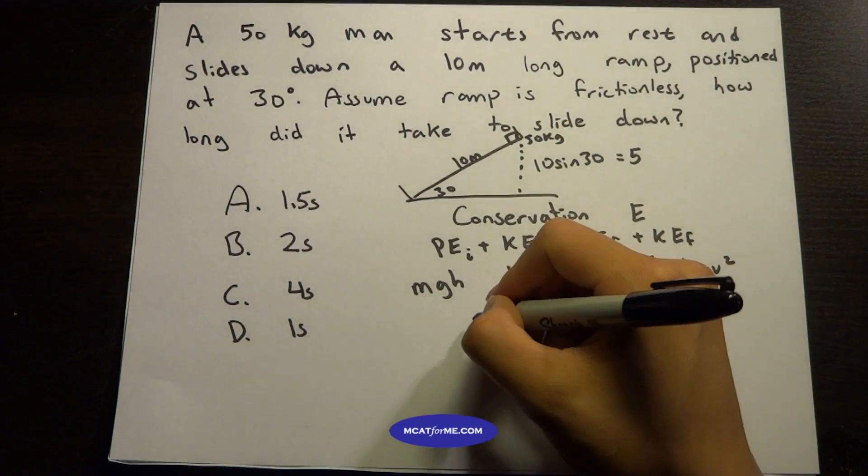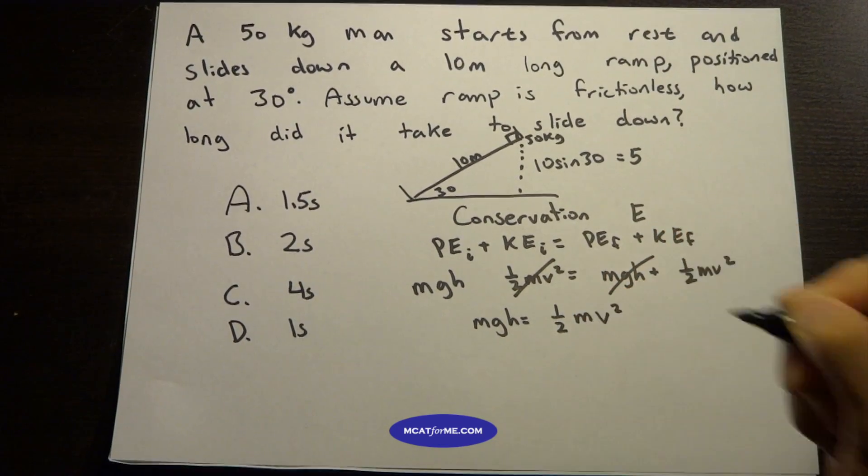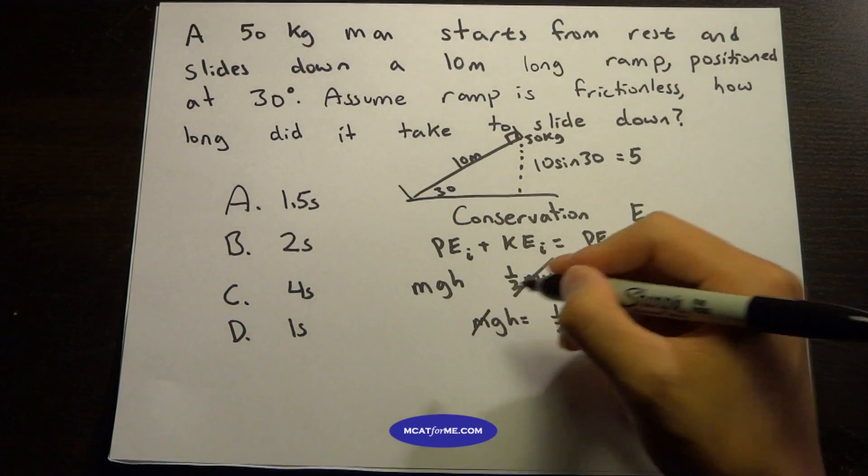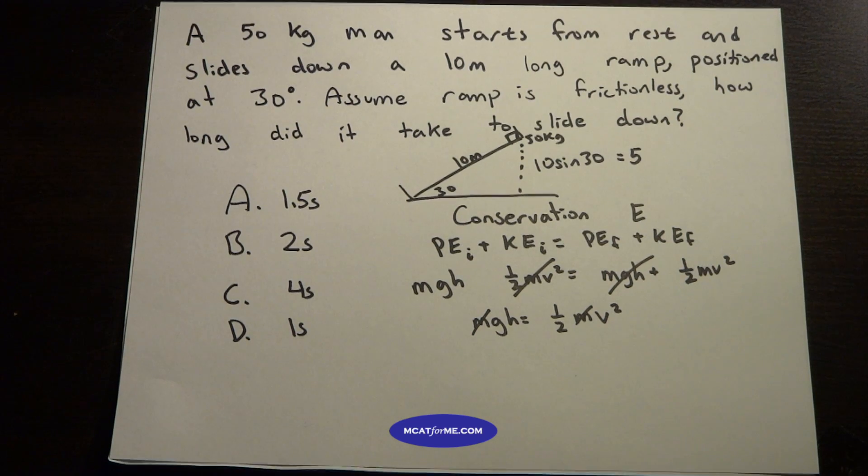So we know that all that matters is mgh equals one-half mv squared. We can see right off the bat that the m's never matter. That's the case for all these potential energy and conservation of energy questions. The mass is irrelevant. It could be 100 kilograms or it could be 1 kilogram, it would still take the same amount of time.